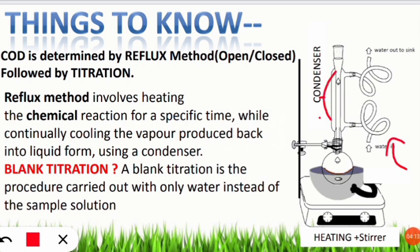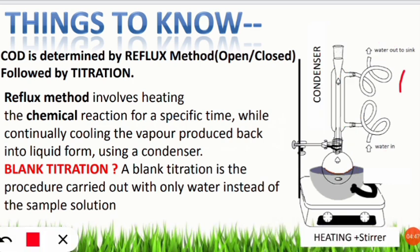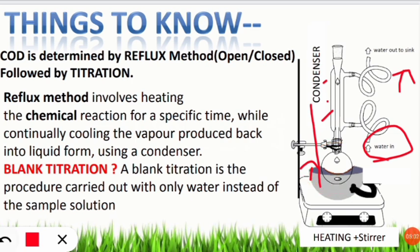We allow water to circulate inside the condenser — it does not mix with the chemicals inside. Water enters through the inlet, circulates inside the condenser, and cools down the heated vapor, condensing it back to liquid. The cooled water then exits through the outlet back to the sink. The condenser's function is to cool the vapor from the chemicals under heating so all chemicals return to the round bottom flask.